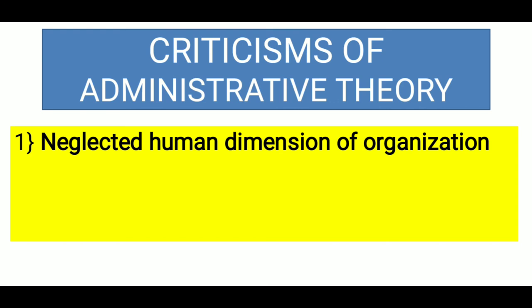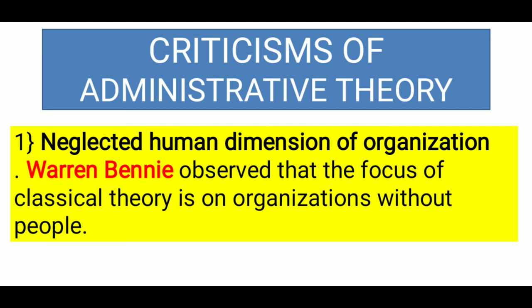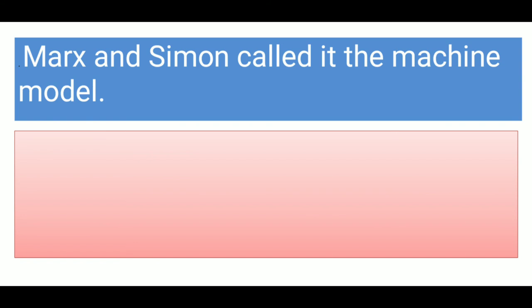बस organization की efficiency और economy के लिए structural arrangement और functionalization को focus किया गया है। Warren Penny observed that the focus of the classical theory is only on organization without people, that's why it has been vehemently criticized. Marx and Simon also called it a machine model — classical theory organization को एक machine मानता है, individuals को totally focus नहीं किया गया है, बस structural और mechanical part को importance दिया गया है।